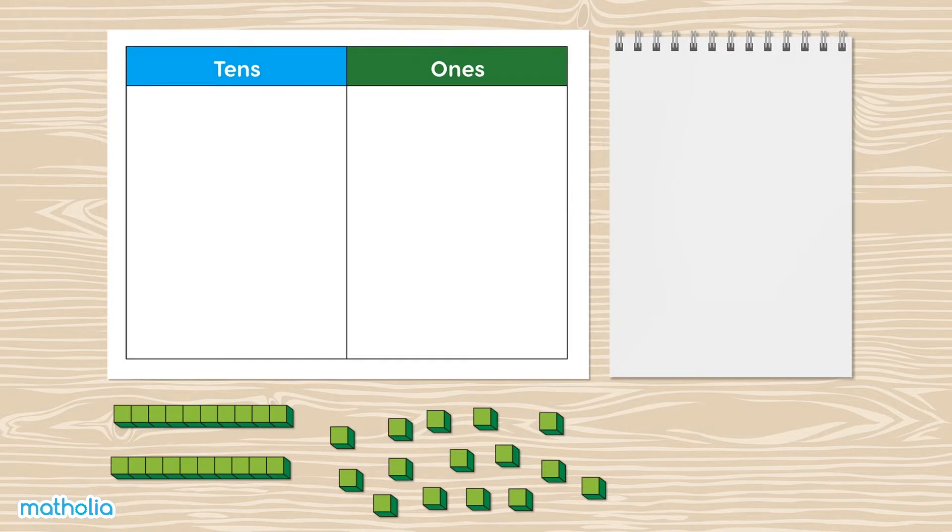We can show 7 with 1, 2, 3, 4, 5, 6, 7 ones.